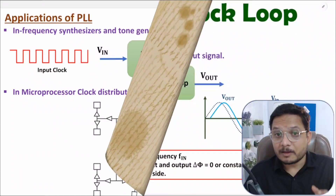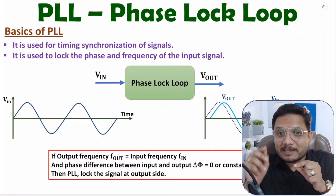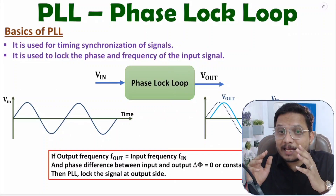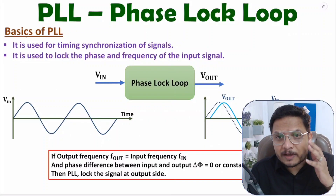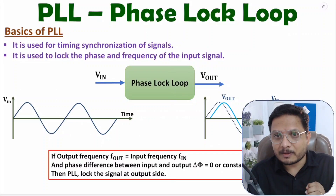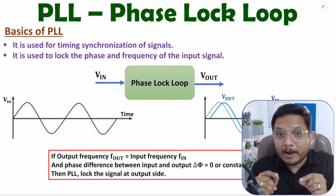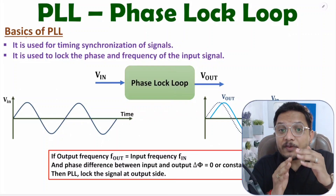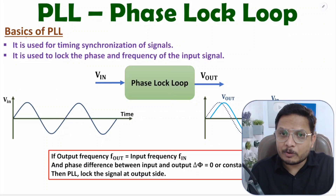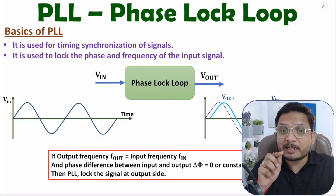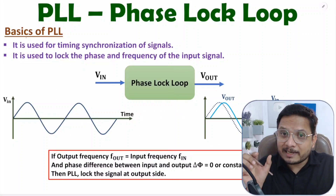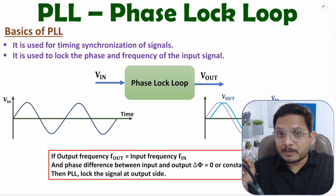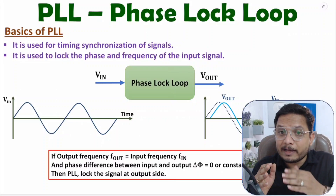Phase Lock Loop is used to generate clock signals for digital circuits and sinusoidal waveforms in analog circuits. The basic agenda of Phase Lock Loop is to provide timing synchronization. In digital circuits it provides bit synchronization, generating square wave clock signals. In analog circuits it generates carrier waves which are sinusoidal, where the agenda is to provide phase synchronization.